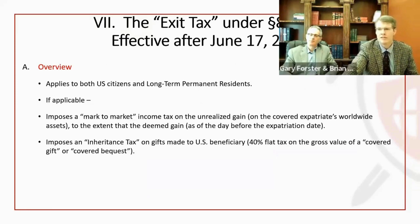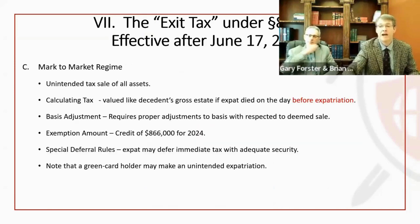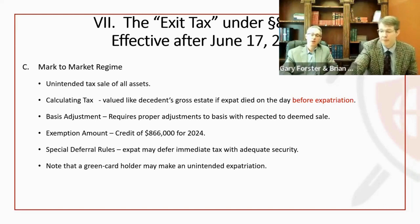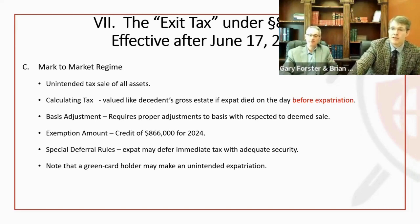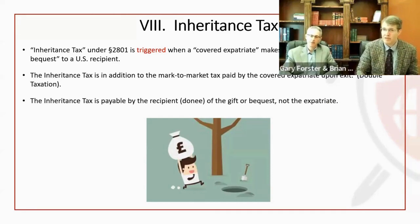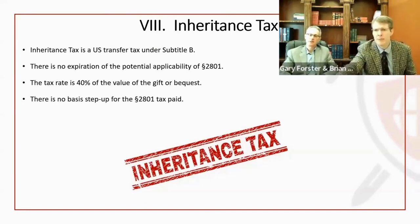On the deemed sale under Section 877A: the exclusion amount is $866,000 (indexed) and it's a deemed sale — not an actual sale. That means you may not get a corresponding step-up in basis in the other country. You're paying U.S. income tax on phantom gain on worldwide assets. The inheritance tax applies to U.S. donees who receive gifts from covered expatriates — they're tainted forever. Any gift from that expatriate thereafter is subject to the 40% inheritance tax; that obligation does not go away.